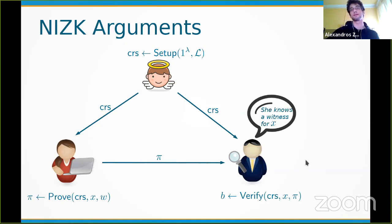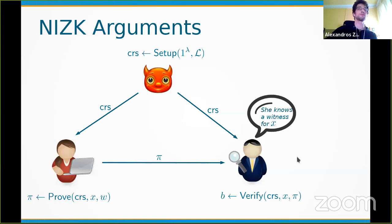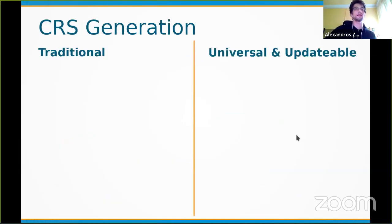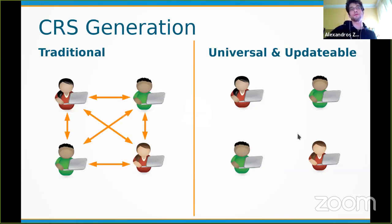An additional desirable property is that the proof is sublinear in the witness size. Since there are no trusted parties in the real world, the question is how to instantiate the CRS with guaranteed properties. A standard technique uses multi-party computation: a set of parties exchange messages and collectively output a common reference string, requiring that at least one behaves honestly.